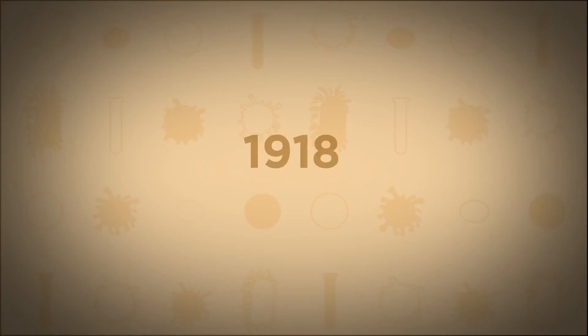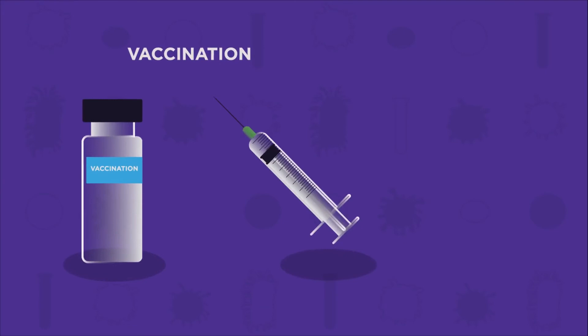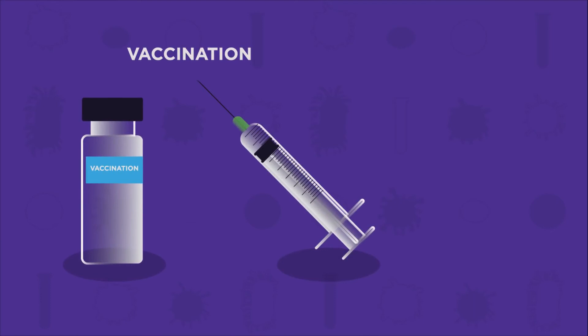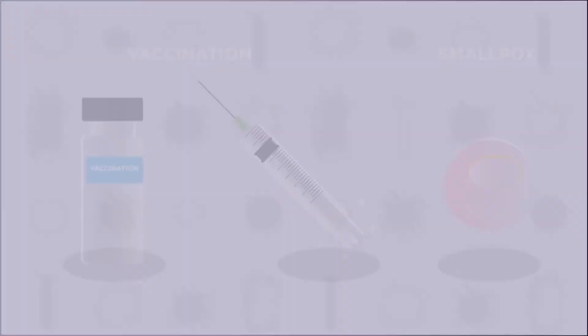Scientists have developed vaccinations against lots of viruses, which have even led to the eradication of some viruses, like smallpox, as human hosts become immune. However, some viruses, like HIV, have proved impossible to develop any kind of vaccine for.